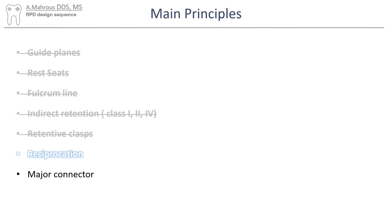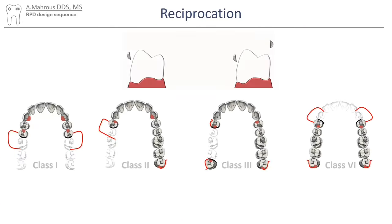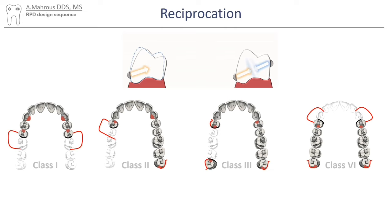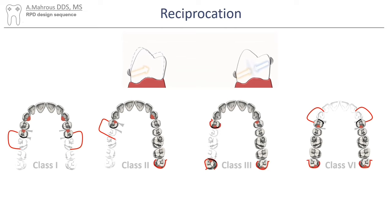Reciprocation comes next. Reciprocation is provided by rigid metal structures like minor connectors, plates, and reciprocal clasps that are used to counteract the forces exerted on abutment teeth by retentive clasps. The reciprocal elements are added to each retentive clasp.